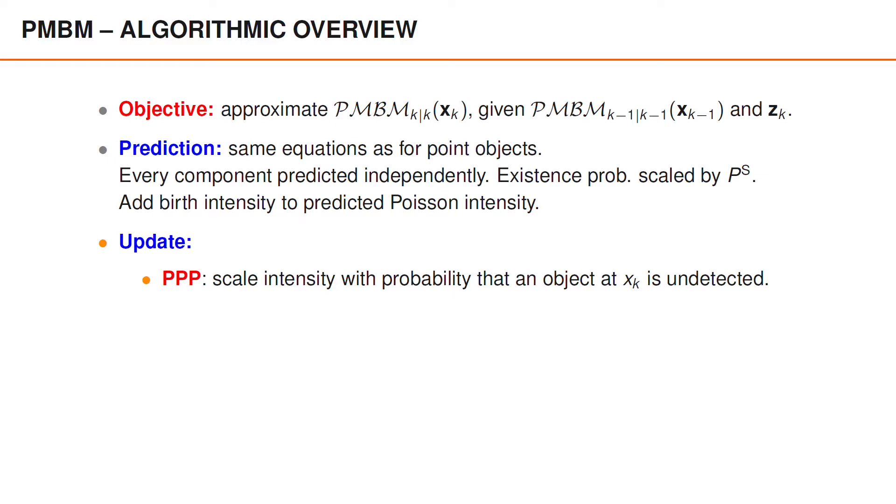The update step is more interesting, but updating the Poisson point process is actually equally simple as before, and we simply scale the intensity function by the probability that an object is undetected.